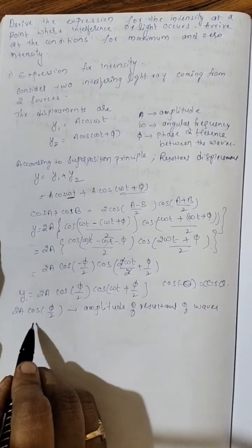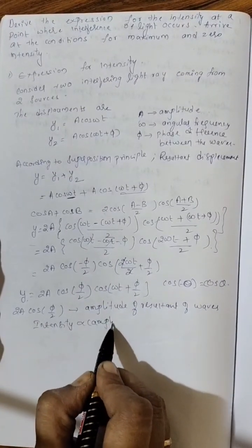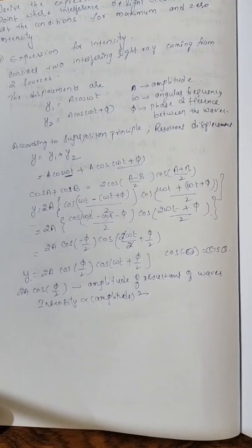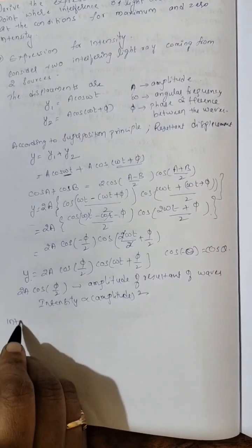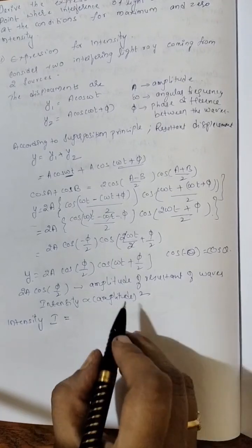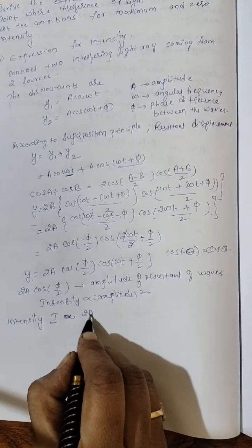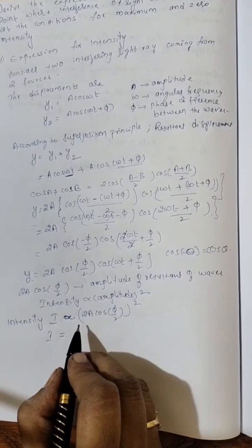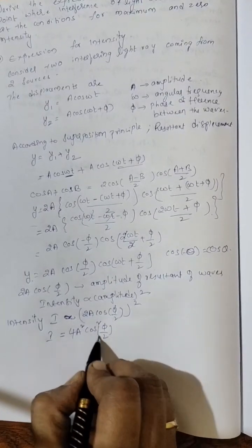So now we know that intensity is directly proportional to the amplitude square, no? Now what we have to find? The intensity at a point where the interference of light occurs. We have to find that only. So the intensity we will denote with capital I is equal to, what is amplitude? 2A cos phi by 2 whole square.